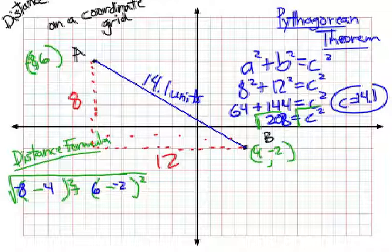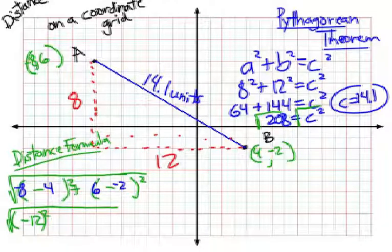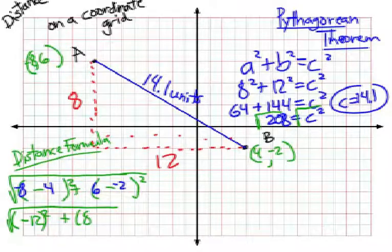So, I would have the square root of negative eight, take away four, is negative twelve. But we're going to square that. Six, take away negative two, would actually be positive eight. We're going to square that.